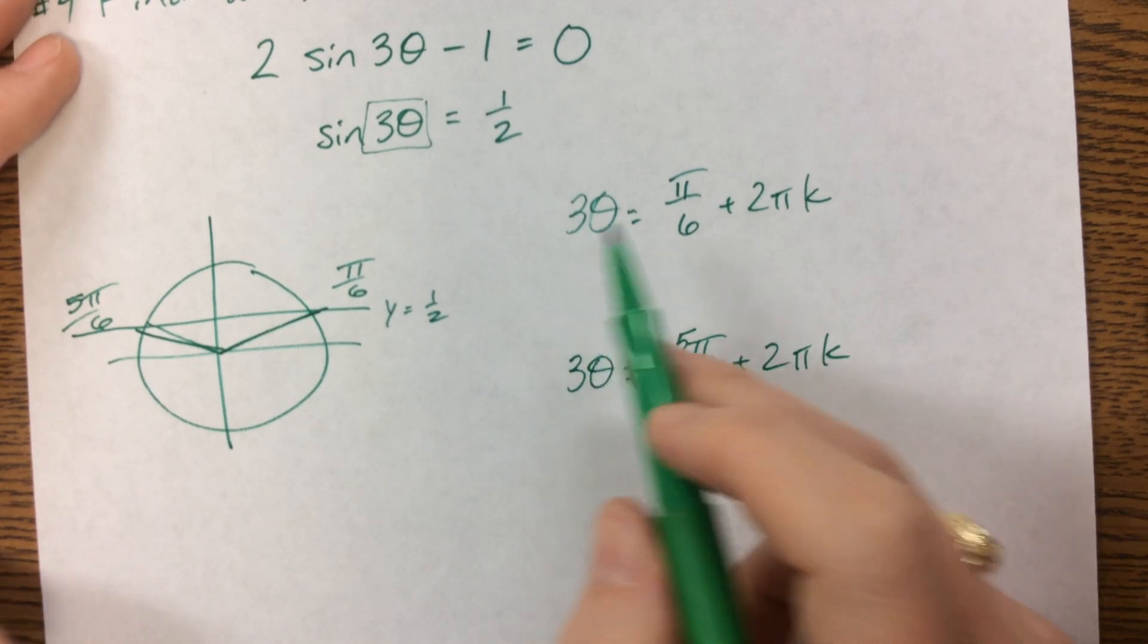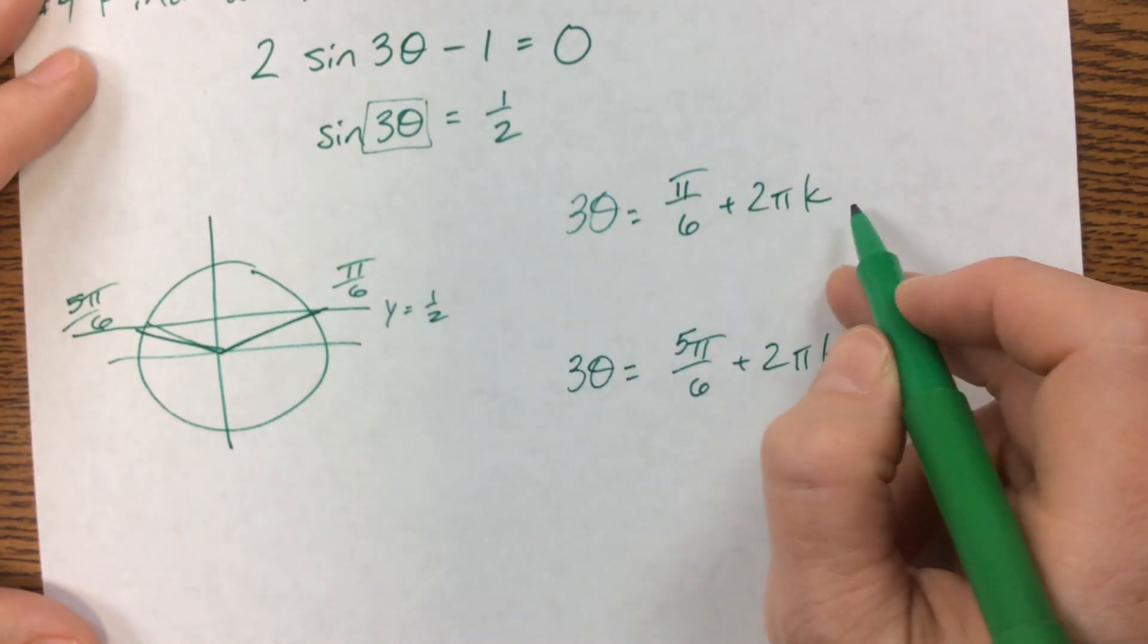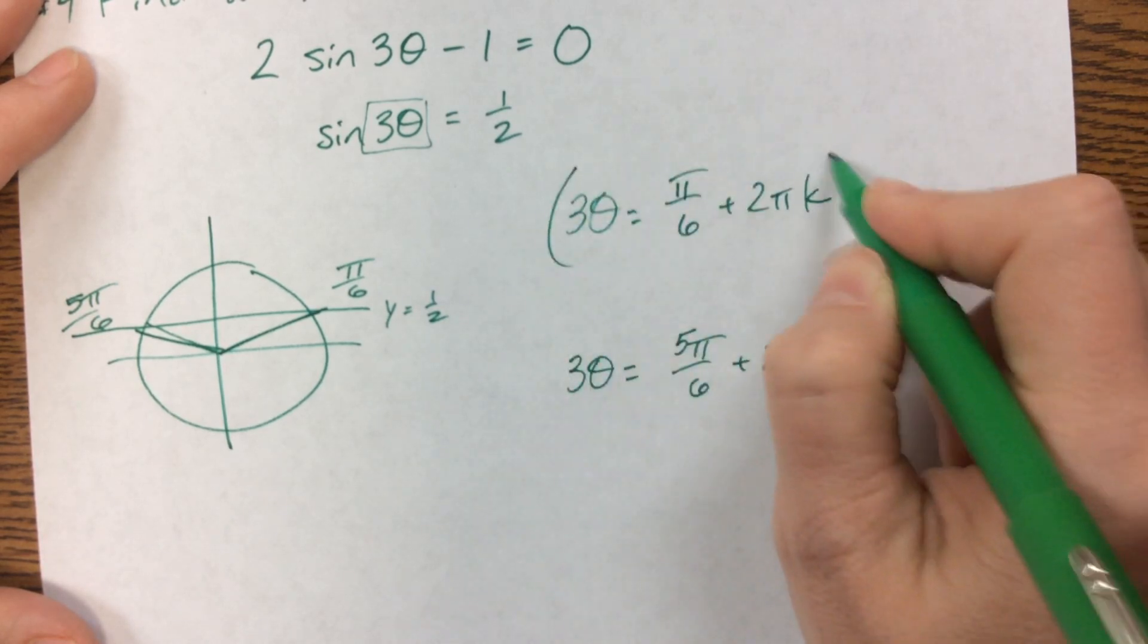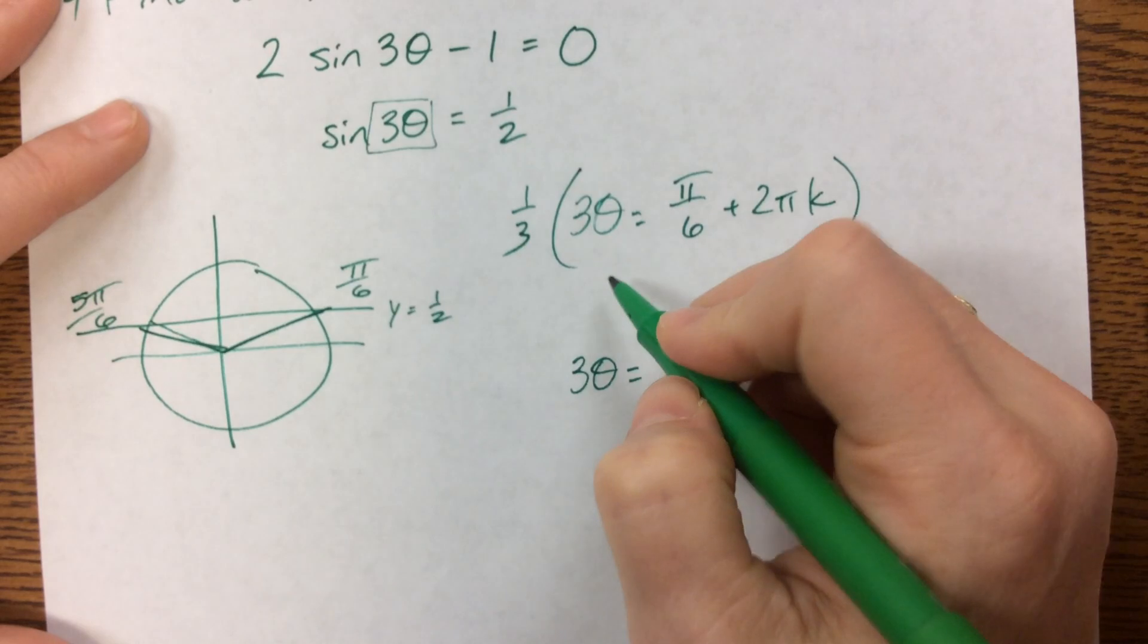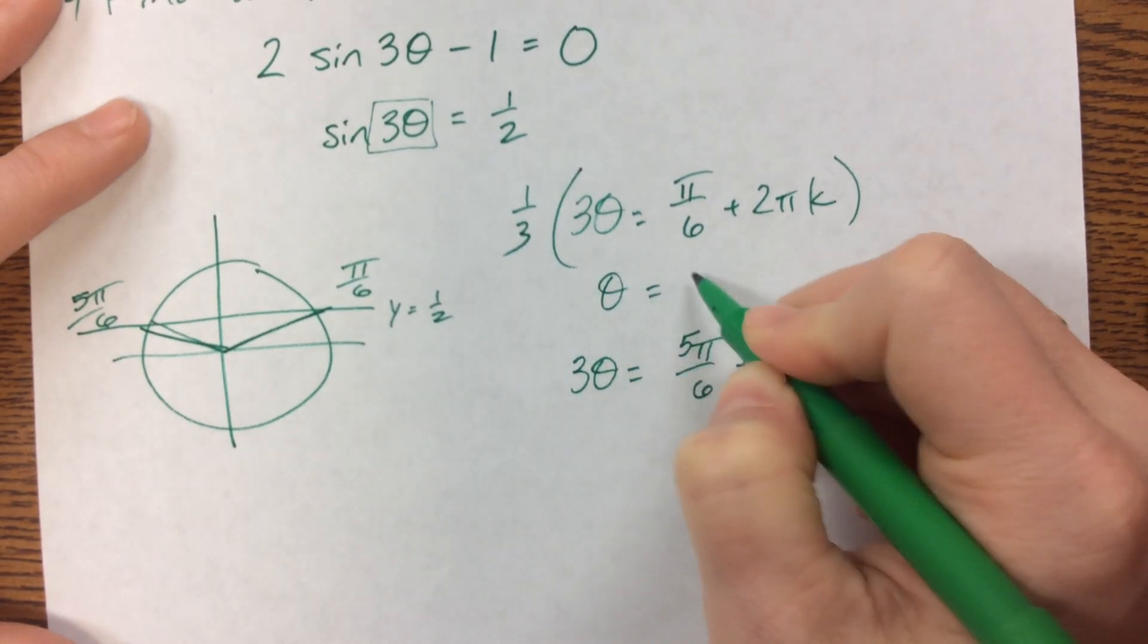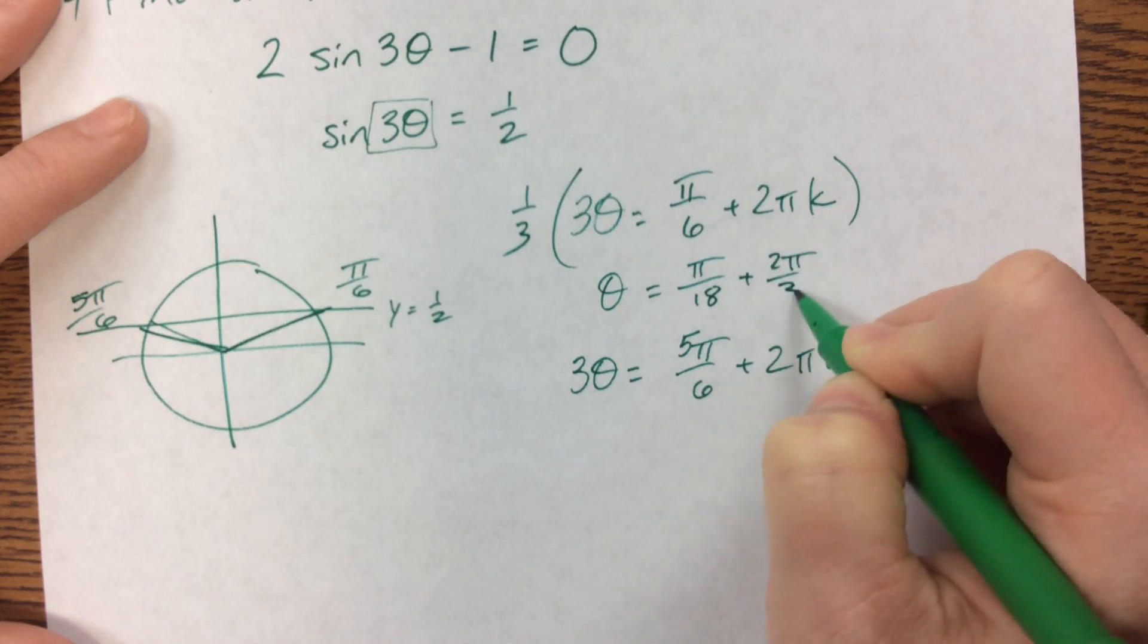Well, we don't want to solve for 3 theta. We want to solve for theta. So we're going to divide everybody by 3 or multiply everybody by 1 third. Sometimes it's easier to think in terms of multiplying when it's a fraction.